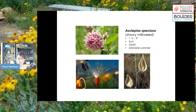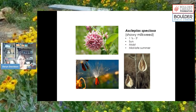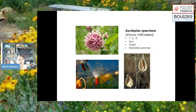Asclepias speciosa is showy milkweed. Many people are familiar with milkweed, especially if they're interested in monarchs and other butterfly species. We are on the edge of the monarch migration pattern, but some people get monarchs in their yards and they need milkweed. Even if you don't plant it for monarchs, other pollinators use it too. If you live near a small acreage or open space, manage milkweed a little, since it can be toxic to livestock.